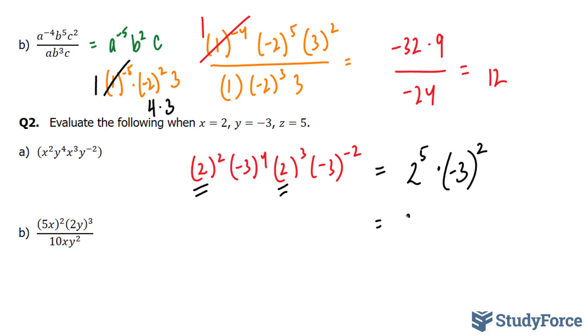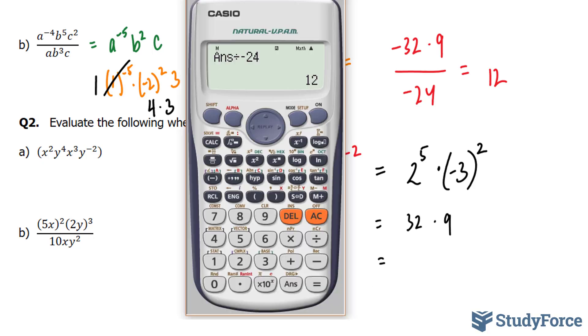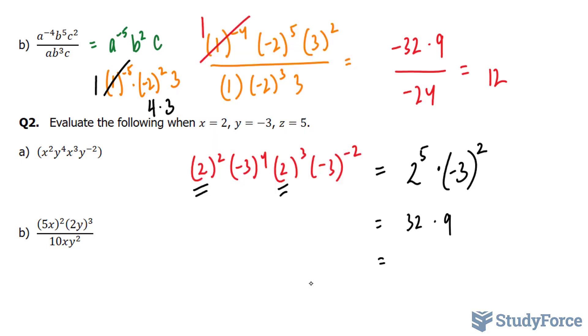Simplifying this, 2 to the power of 5 is 32, times negative 3 to the power of 2 is positive 9. Using our calculators, we end up with 32 times 9, and that is equal to 288.